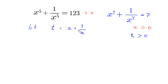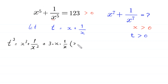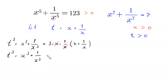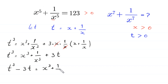If we take a cube of both sides of this equation, this will become t cubed is equal to x cubed plus 1 over x cubed plus 3 times x times 1 over x times x plus 1 over x. The x cancels out and this becomes t cubed equals x cubed plus 1 over x cubed plus 3t. Moving 3t to the left, we get t cubed minus 3t is equal to x cubed plus 1 over x cubed.